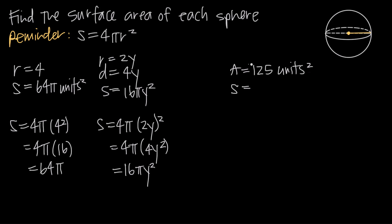Now this problem is a little different. We're told that the area of a cross section of the sphere is 125 square units. The cross section they're talking about is the circle that runs directly through the middle of the sphere. Because we're dealing with a sphere, any cross section through the middle is going to be a circle, and we've been told its area is 125 square units.